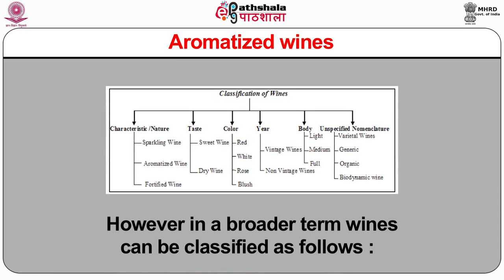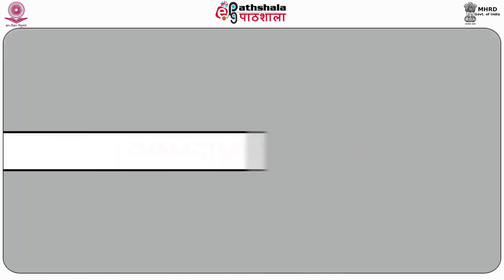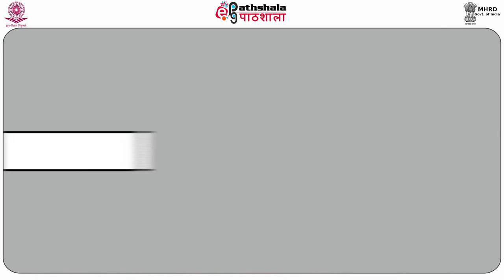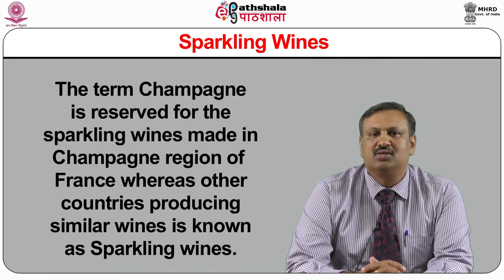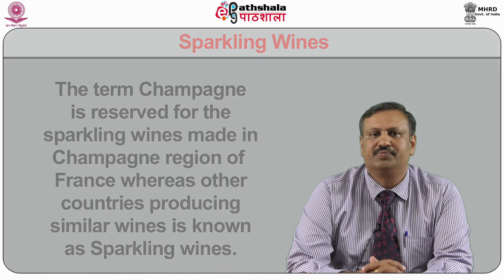In a broader term, wines can be classified as follows on the basis of characteristic and nature. Sparkling wines get their sparkle or effervescence from carbon dioxide — Cava from Spain, Prosecco and Asti Spumante from Italy are examples. The term Champagne is reserved for sparkling wines made in the Champagne region of France. Aromatized wines are fortified and aromatized by botanicals such as herbs, roots and many more. Vermouth, Dubonnet and Lillet are famous aromatized wines.